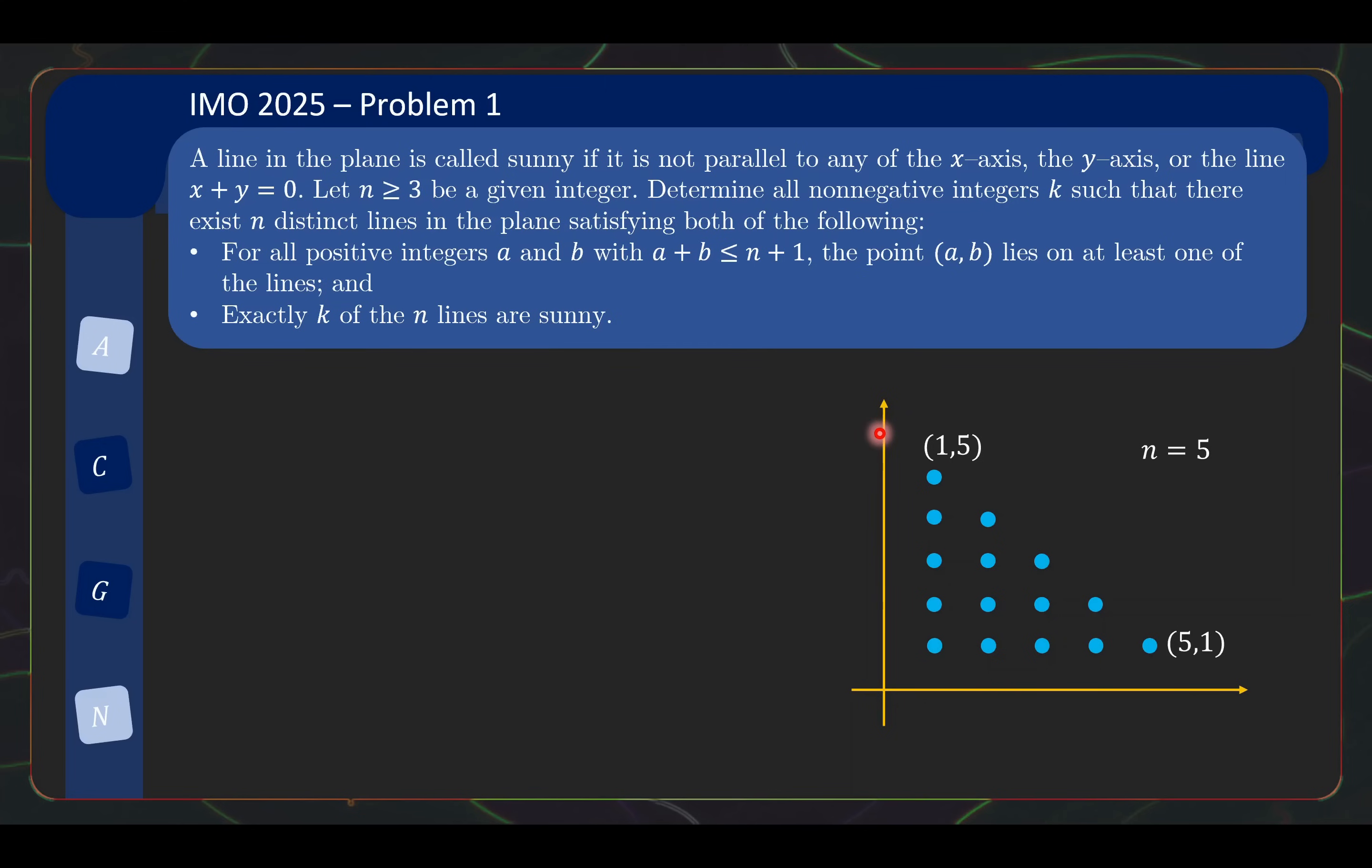And what we want are n distinct lines that basically cover all the dots. This is what this condition is saying. The points all lie on at least one of the lines. Over here, I have drawn 5 lines that cover the blue dots. Let's look at the second condition. Exactly k of the n lines are sunny.